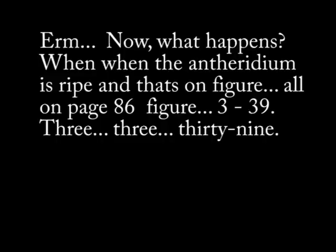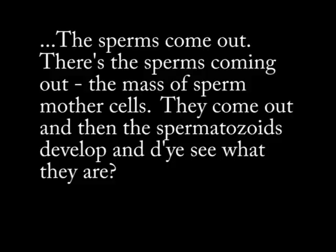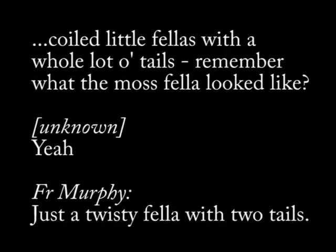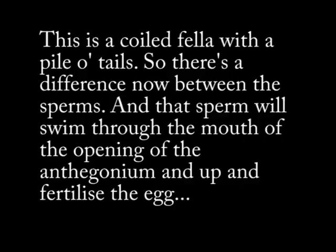Now, what happens? When the anteridium is ripe — that's on page 86, figure 339 — the sperms come out. There are the sperm mother cells coming out, and then the spermatozoids develop. They are coiled little cells with a whole lot of tails. Remember what the moss sperm looked like? Just a twisty fellow with two tails. This is a coiled fellow with a pile of tails. So there's a difference between the sperm. That sperm would swim through the opening of the archegonium and up to fertilize the egg.